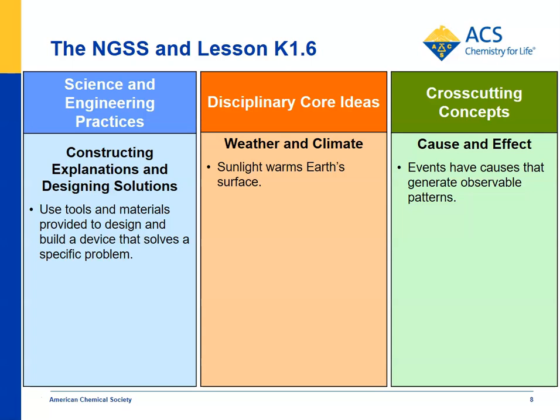Under disciplinary core ideas, weather and climate: sunlight warms Earth's surface. Students take this directly into account because they're trying to block the sunlight so the surface will be cooler. And for cause and effect — events have causes that generate observable patterns — in this case, sunlight hitting the Earth warms the surface, and if you can block the sunlight with a structure, you can cool that area.